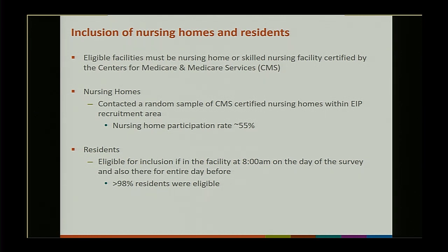To be eligible for participation, a facility needed to be a nursing home or skilled nursing facility certified by CMS. Each EIP site constructed a list of eligible nursing homes within their area, then randomized and contacted them. Randomizing nursing homes helps ensure a sample more likely to represent nursing homes nationally. Overall, we had a nursing home participation rate of about 55%, which is actually quite good for a survey of this type — we had anticipated around 33%.